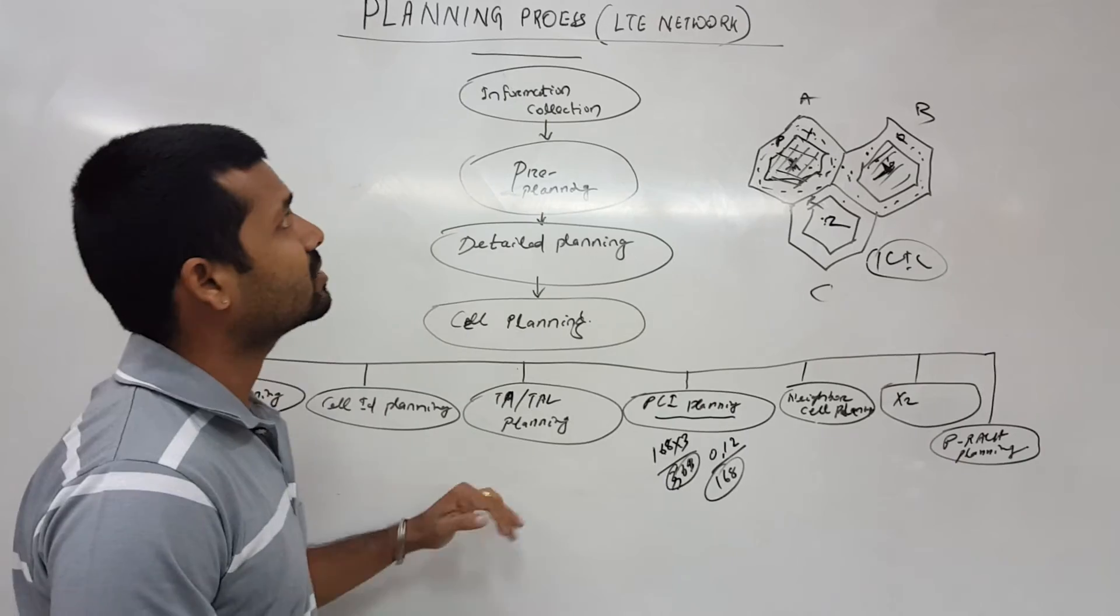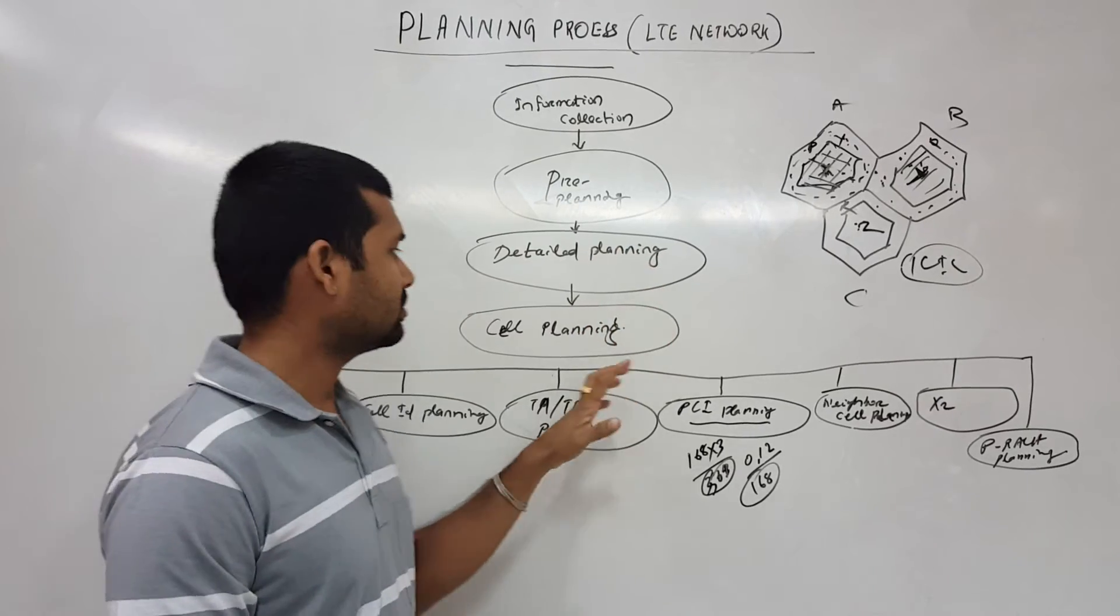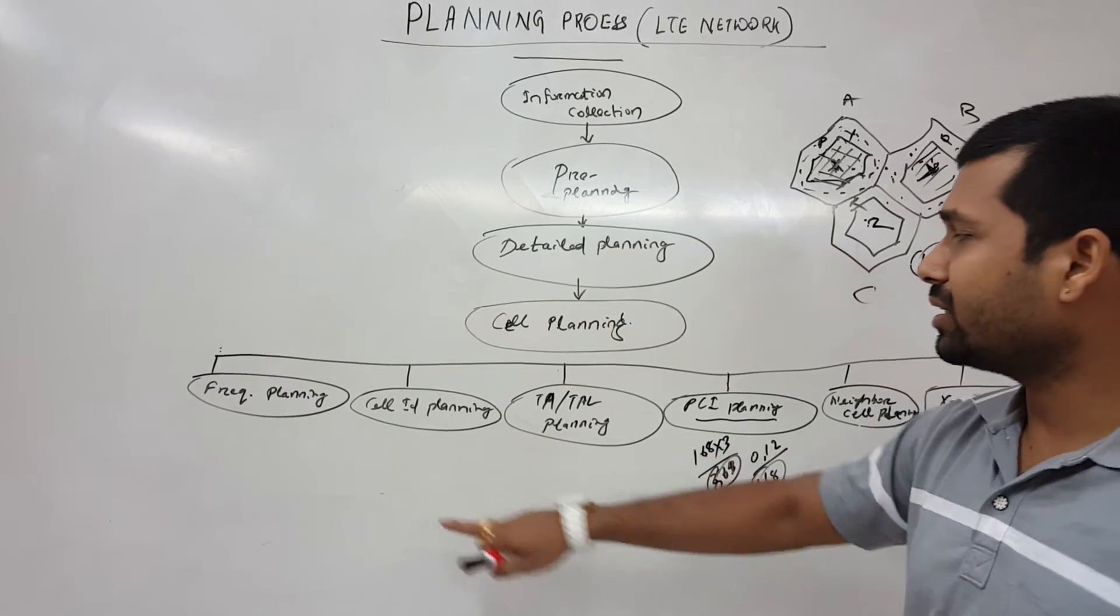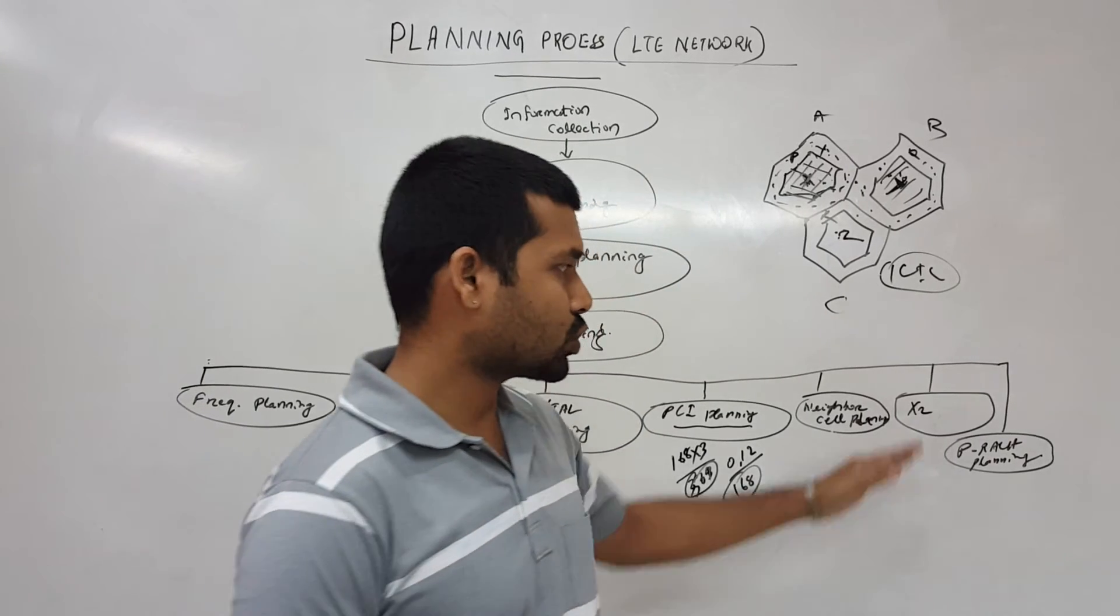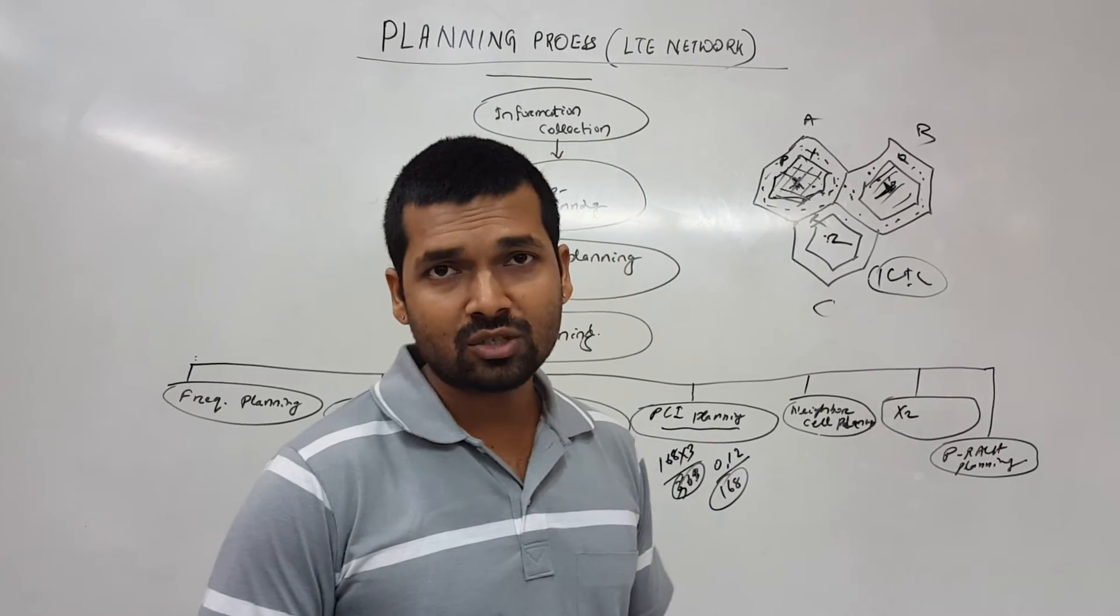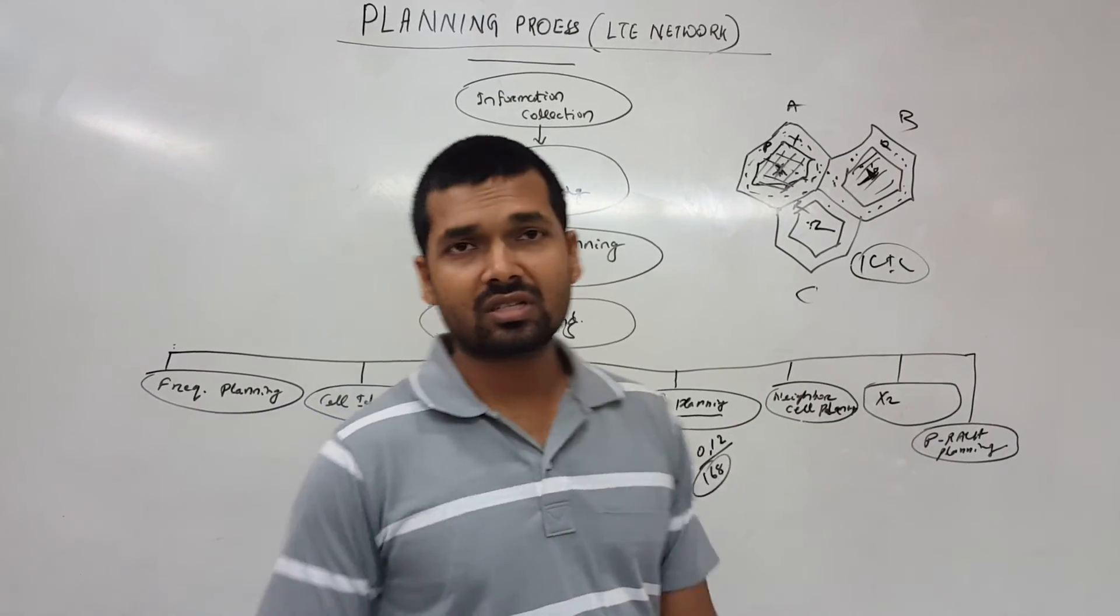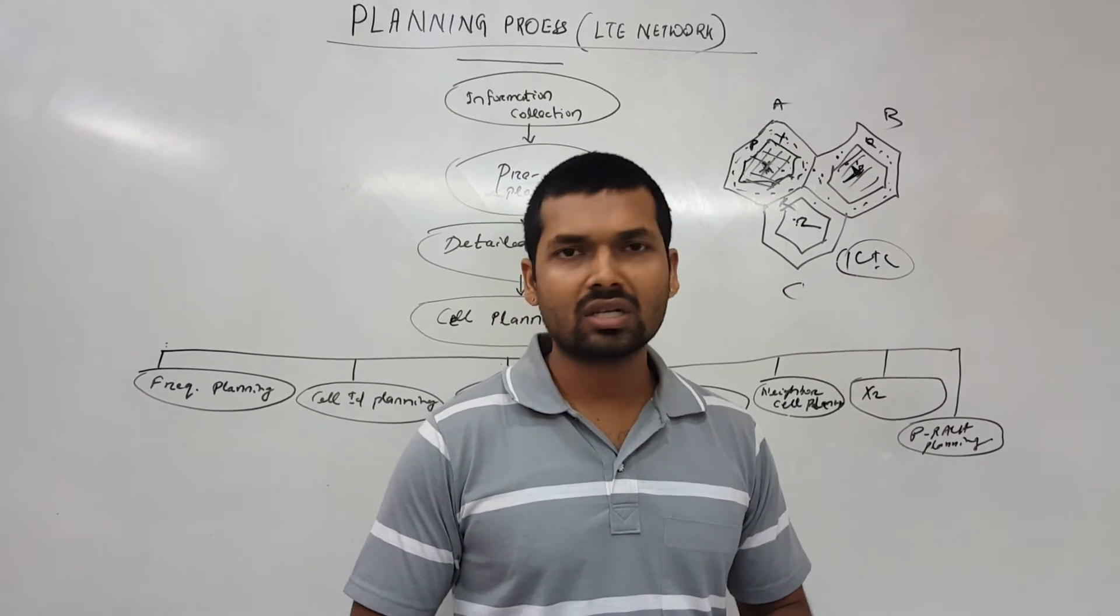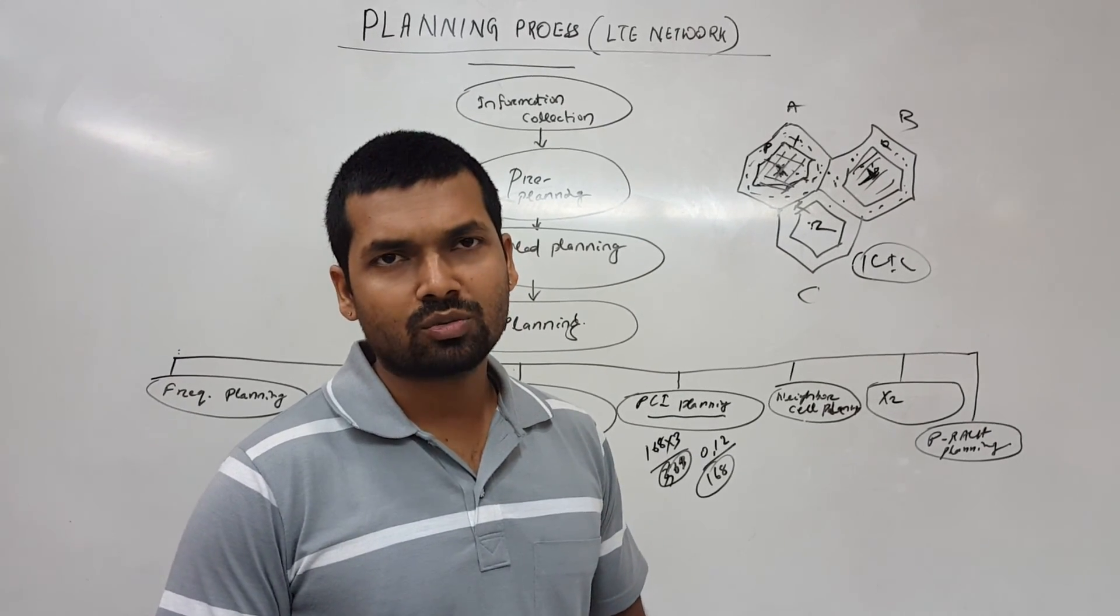So this is all about the process of planning how we do the planning process in LTE network: information collection, pre-planning, detail planning, cell planning. So in cell planning we have frequency planning, cell ID planning, TAC and TAL planning, PCI planning, neighbor cell plans, X2 interface plans, and P-RACH planning. That's all for today. Thanks for watching. In the next video we'll be covering each of these aspects and some other important factors like link budget planning, getting the cell radius, understanding the path loss, losses and gains, and many more stuff. Thank you so much for watching. Thanks.